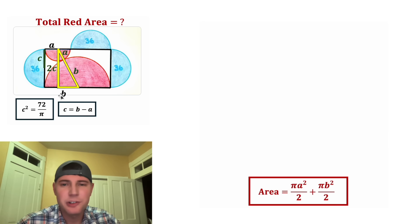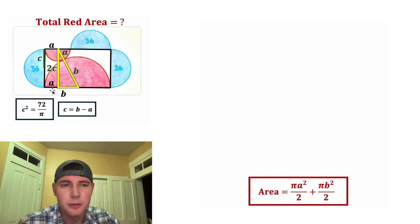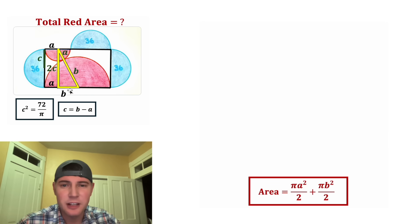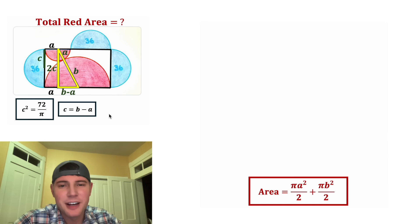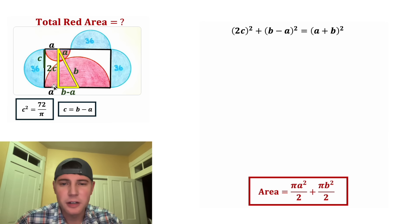If we complete this side we'll have our right triangle — let's make it yellow. In our yellow right triangle we have one side of 2c and another side of a + b. We just need to figure out the last side. This portion equals a, and the entire distance from here to here is b, so the yellow piece is b − a. Now we have all three sides and can apply the Pythagorean theorem.